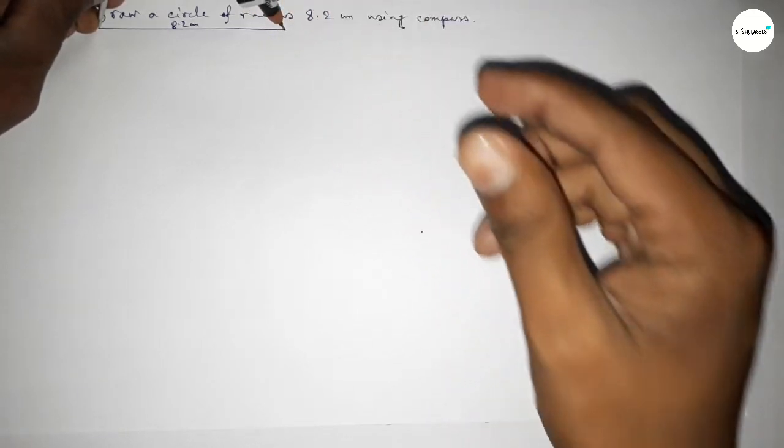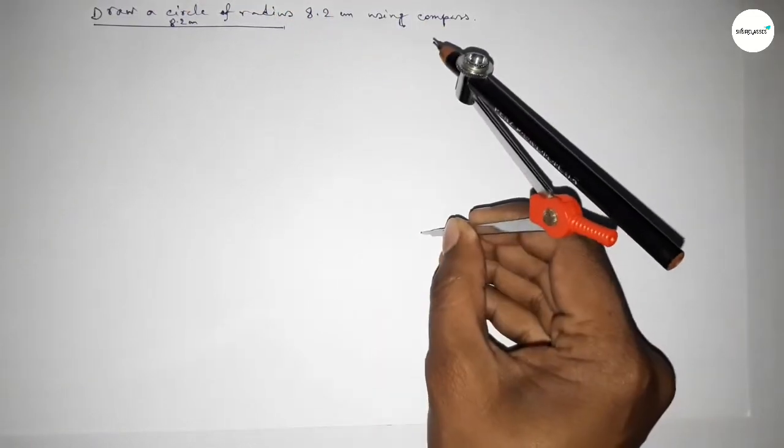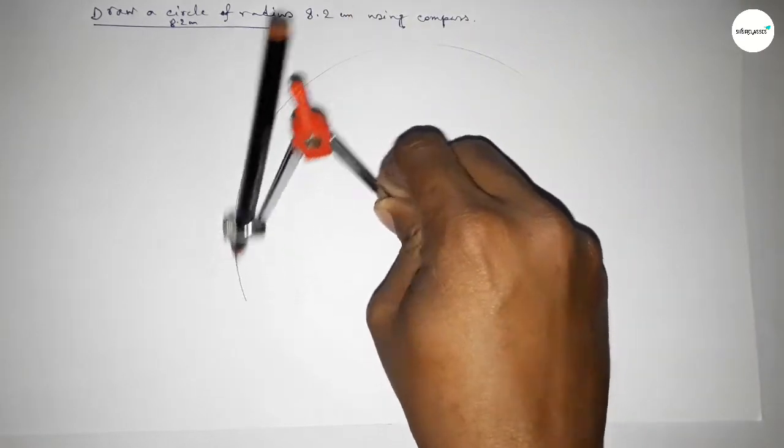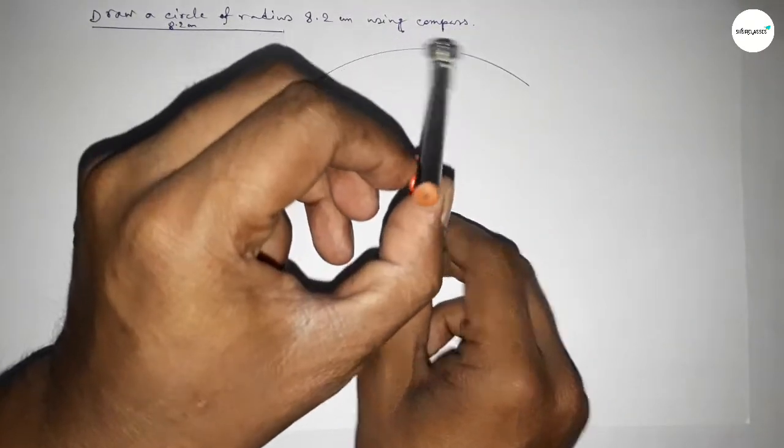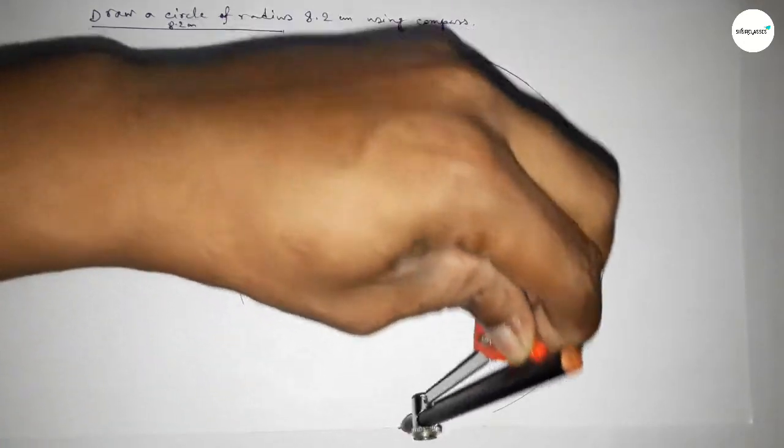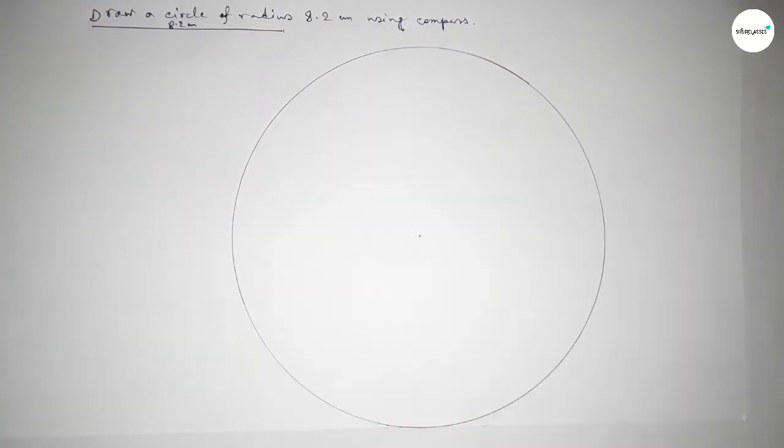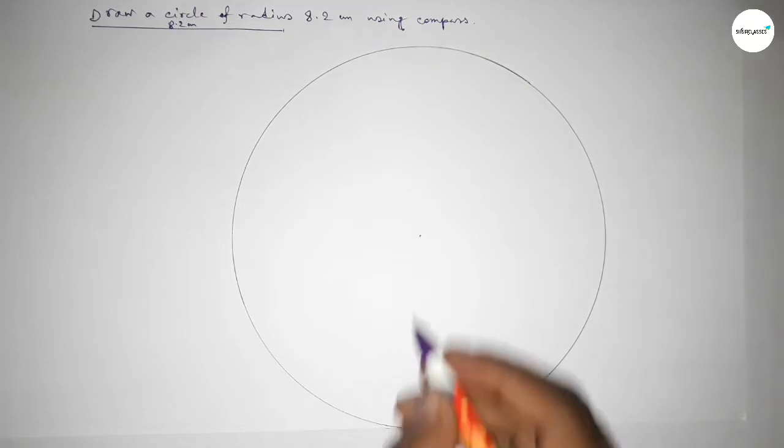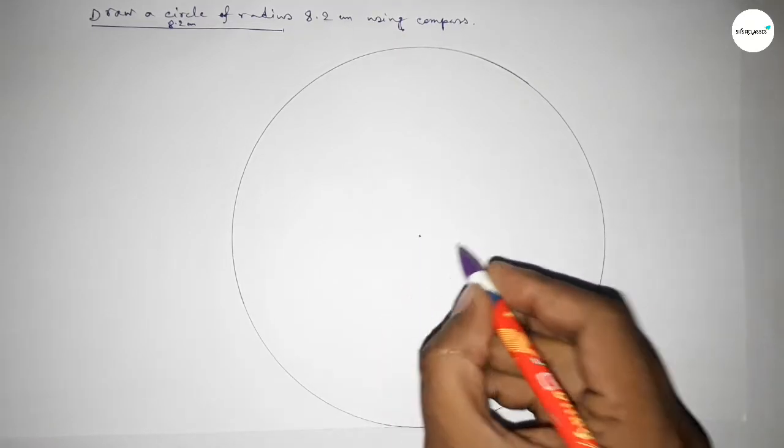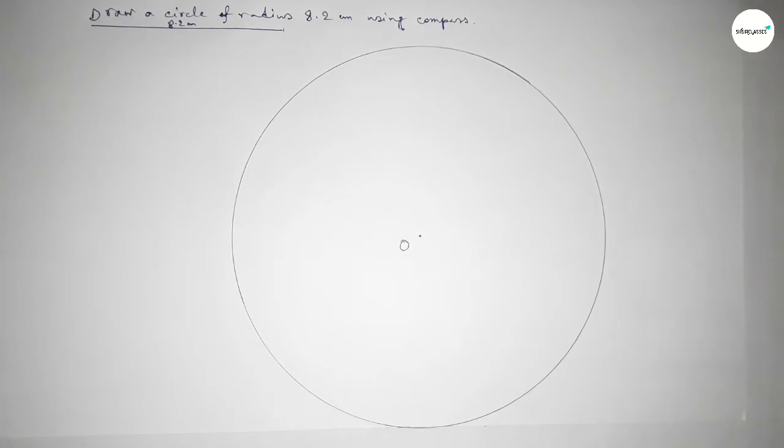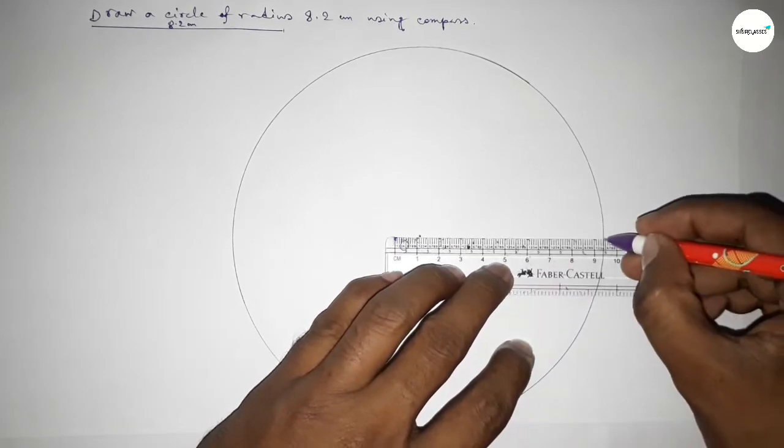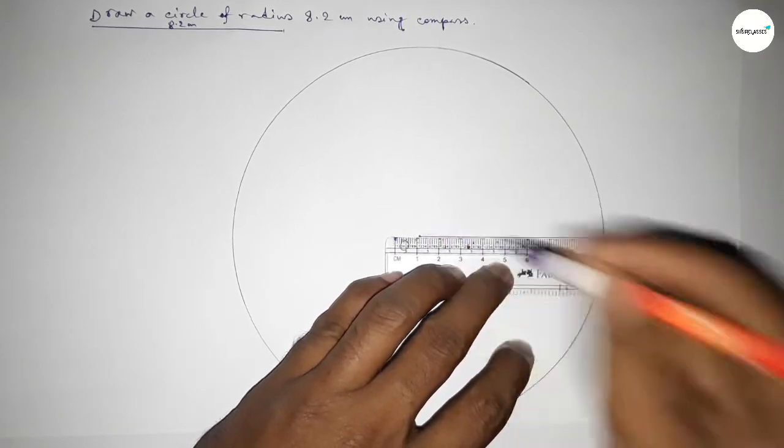Putting the compass on the point here. Now drawing here an arc by this way, which represents a circle. Taking here the center O. Now joining the radius. So this is the radius of this circle.